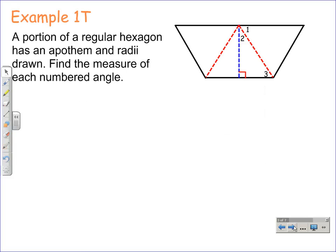In example one, we're given a portion of a regular hexagon and it has an apothem and a radii drawn. Find the measure of each numbered angle. Well, this problem starts off with the fact that we're working with a regular hexagon.